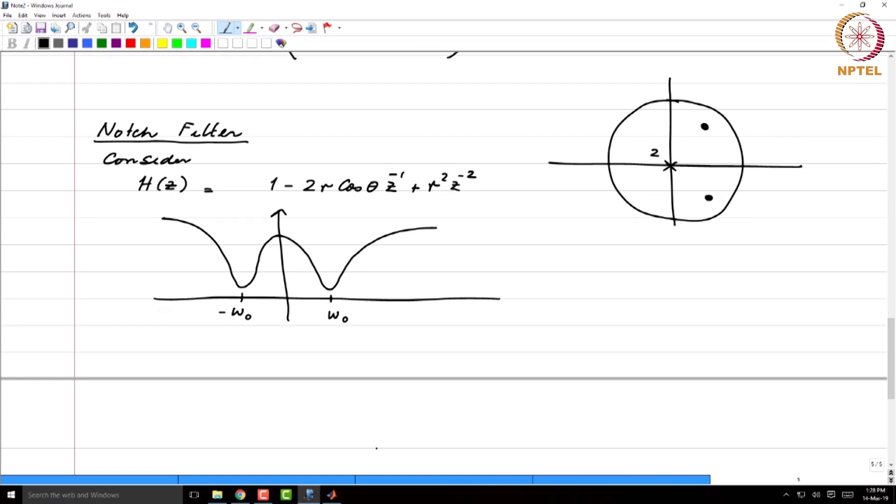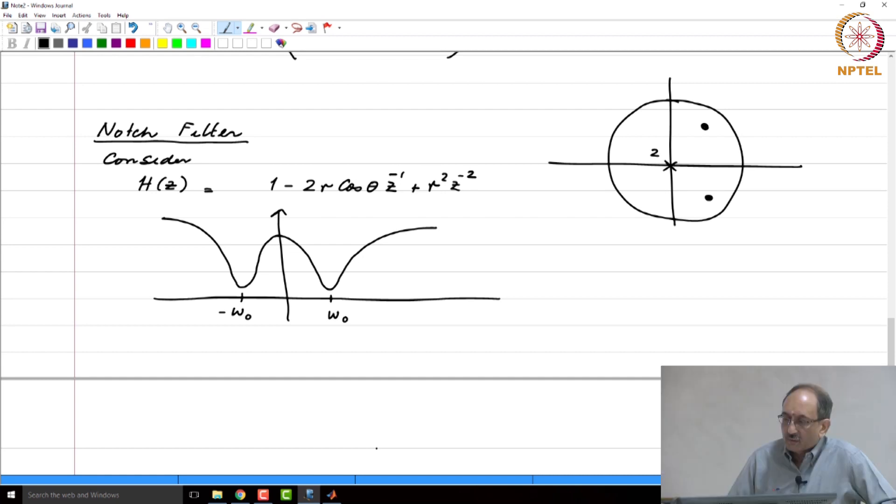Now, based on the name notch filter, you expect the filter to actually completely eliminate a certain frequency. So, for that to happen, you need to let r become 1. Therefore, if r equals 1, then what can you tell about omega naught? Omega naught becomes theta.